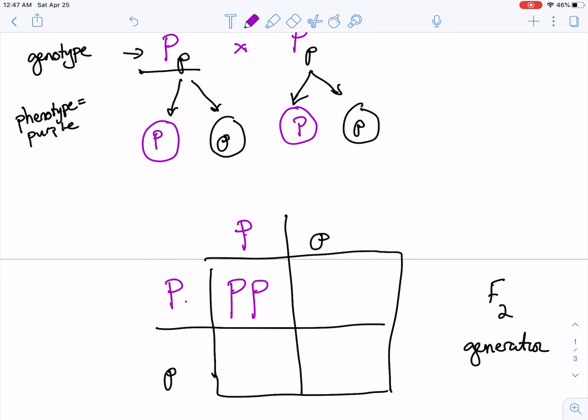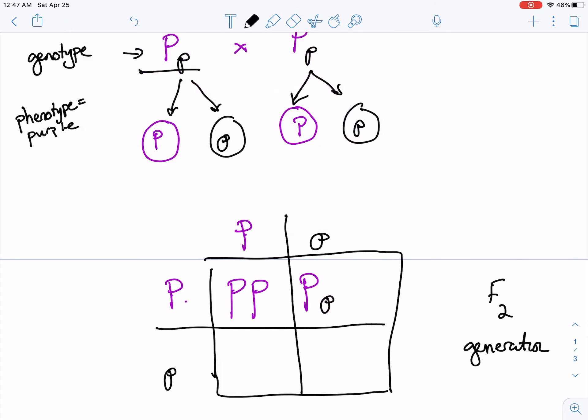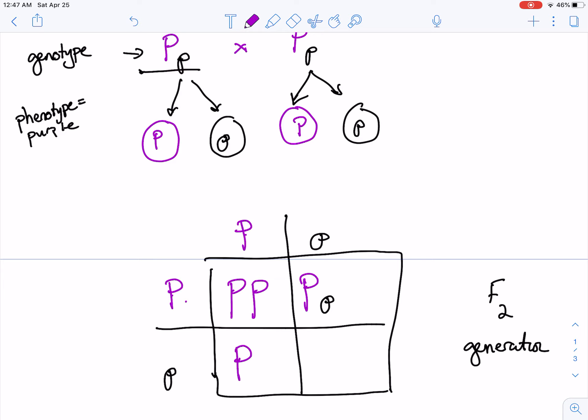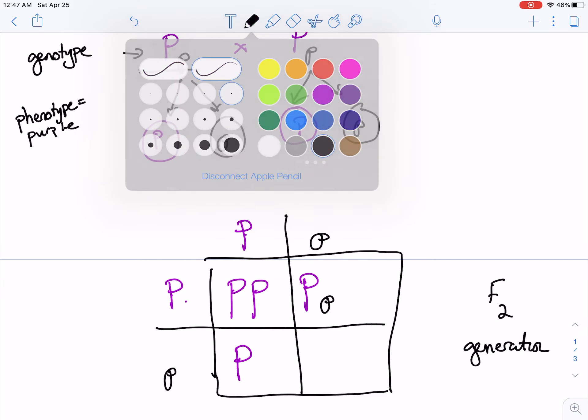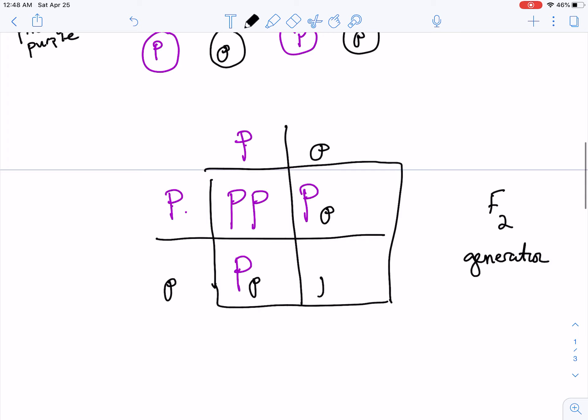The next row, or the next column is big P, little p. With this row here, we're going to have big P, little p, and then finally, little p, little p.